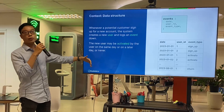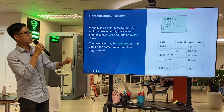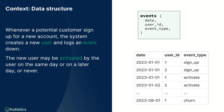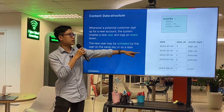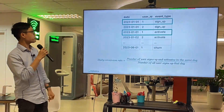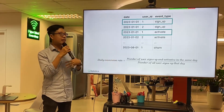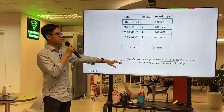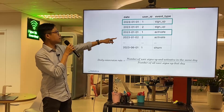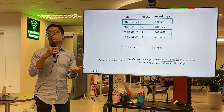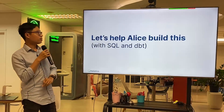We start with an events table. Whenever a user signs up, you have an event type 'signup' with a date, user ID, and a new event. If the user activates on the same day, you create another event called 'activate.' The same-day activation rate is the number of users who sign up and activate on the same day, divided by all users that day. For example, two users signed up but only one activated — that's a 50% rate.